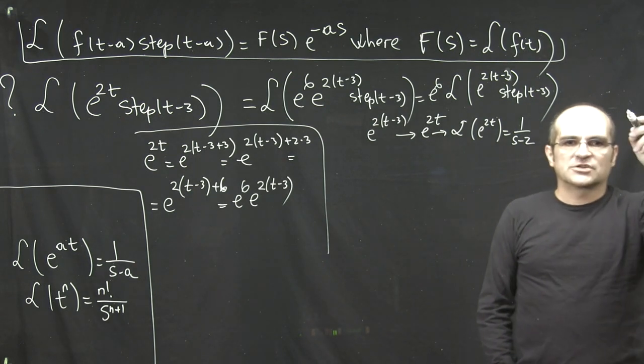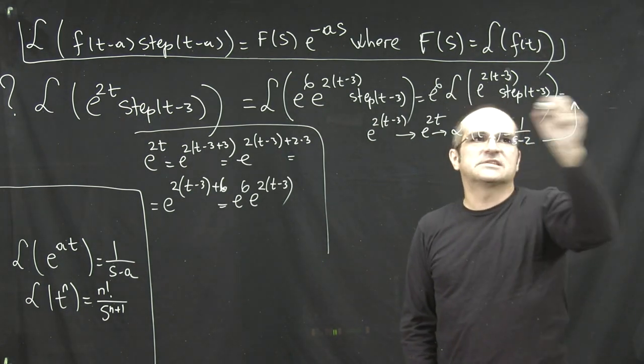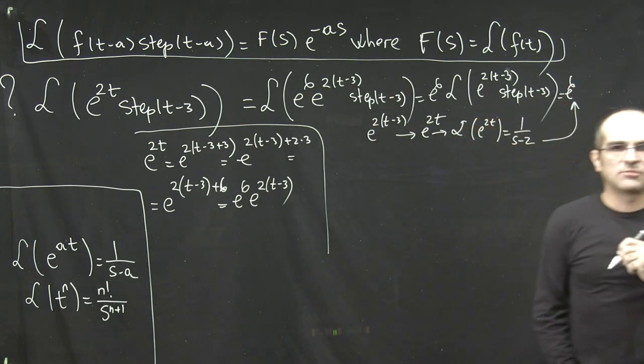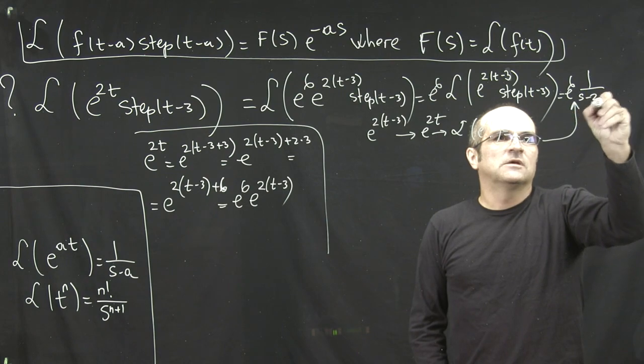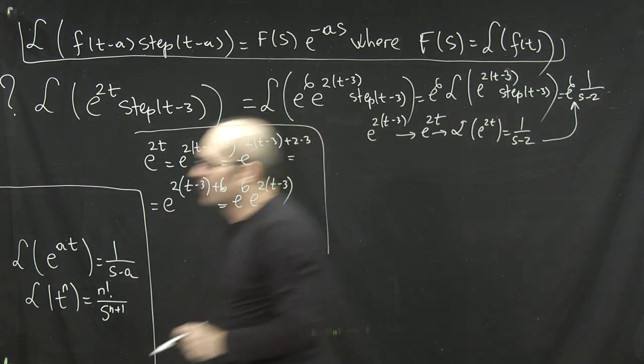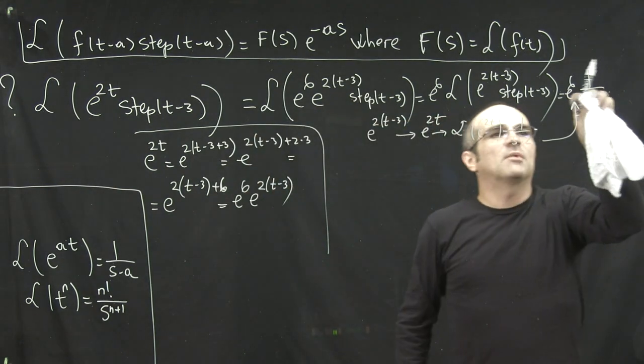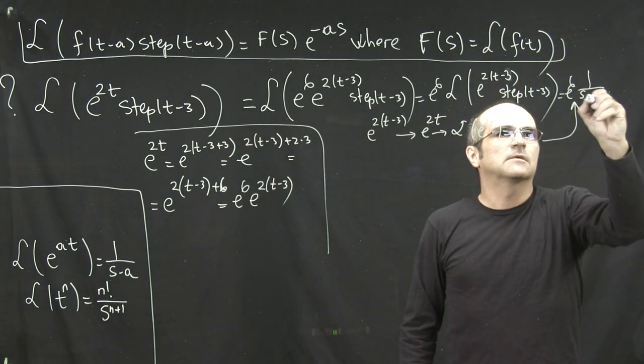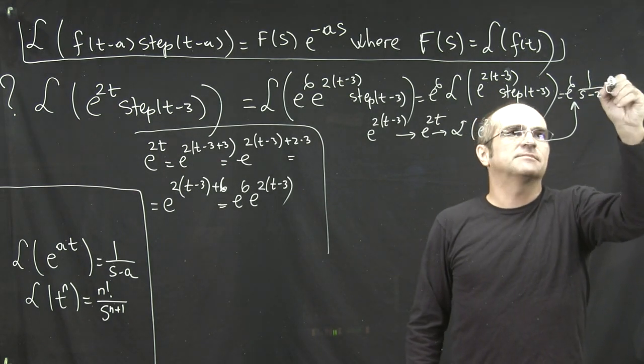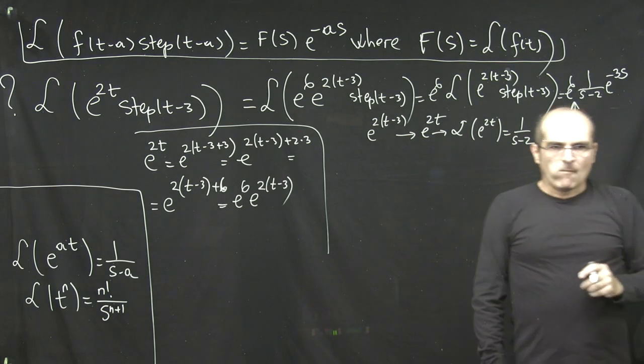And then finally finish the problem by writing here e to the 6, which was outside from the beginning, 1 over s minus 2 coming from this, from f(s), and then e to the minus as, which is in my case minus 3s.